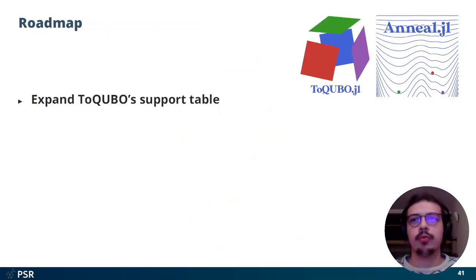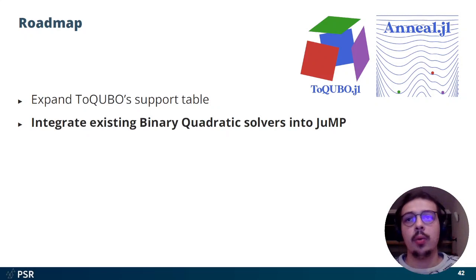So before finishing our talk, I want to present the roadmap. We want to expand QUBO support, adding more constraints to its translation possibilities. We also want, as mentioned, to integrate existing binary quadratic solvers, mainly open-source ones, into Jump using QUBOTools.